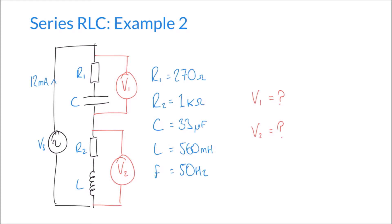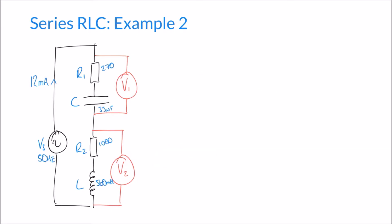To calculate V1 and V2 there are a few steps to work through. First, let's forget about the voltages for now. We have two components with a reactance: the capacitor, which has reactance Xc, and the inductor, which has reactance Xl. Our capacitor has a capacitance of 33 microfarads. So Xc equals 1 over 2πfc, which is 1 over 2π × 50 × 33 × 10⁻⁶.